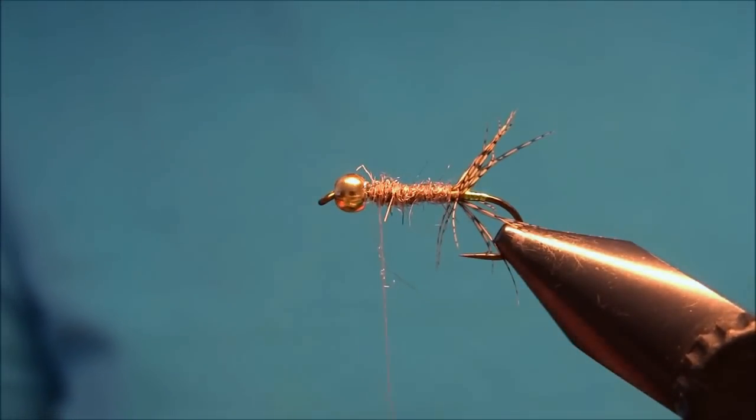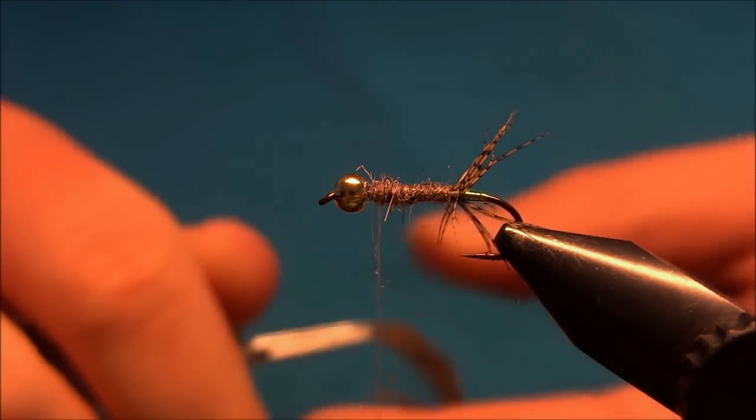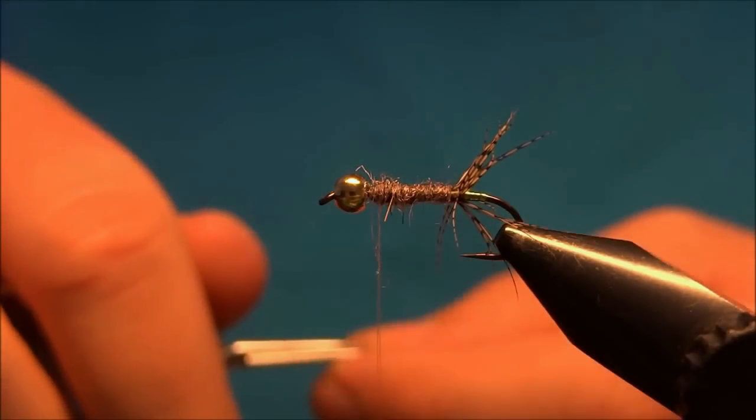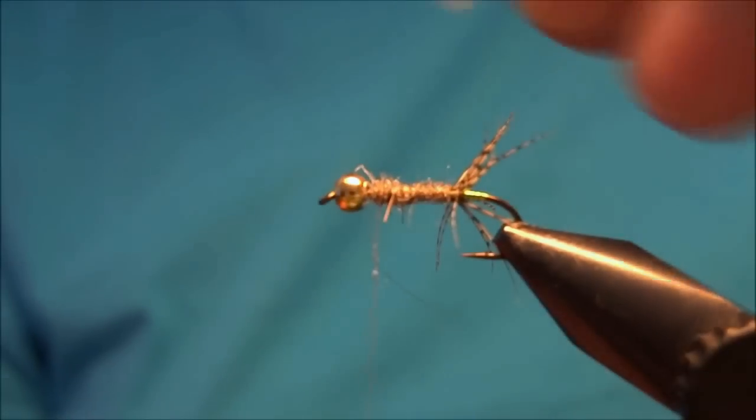Now, just behind the bead, we'll put in the second pair of legs, just as we did before. It's easier with hackle pliers.